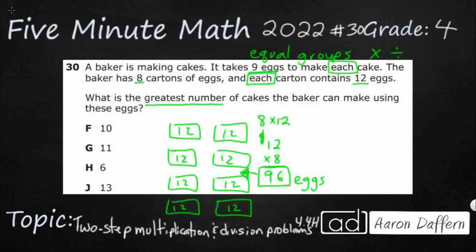It takes nine eggs to make each cake. So I need to take my 96 eggs. I'm going to draw a strip diagram here. So I've got my 96 eggs and I need to put them into groups of nine. And so my question is how many groups of nine can I make? Because each group of nine is going to be a cake. So I've got a total of 96 eggs. How many nines can I take out of there?